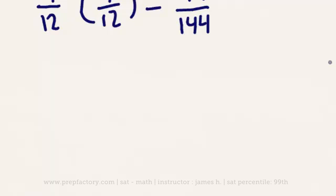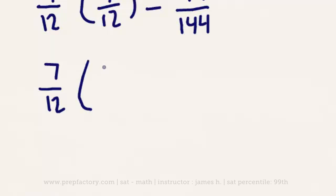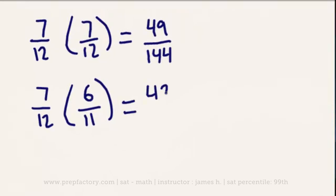Now let's consider the same question without replacement — meaning you select a ball and keep it, then select another without putting the first one back. Your first probability of selecting a yellow ball is still 7/12. But assuming you selected a yellow ball first, your second probability changes to 6 out of 11, since there's one fewer yellow ball and one fewer ball total. Multiplying: 7/12 × 6/11 = 42/132, which reduces to 7/22.